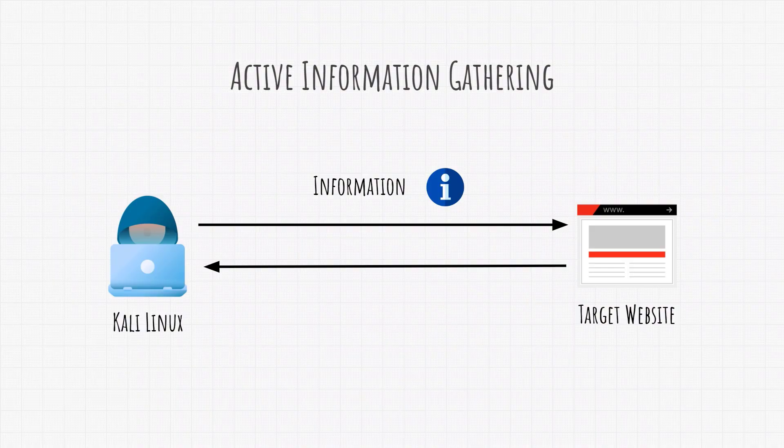This could mean directly exchanging packets with the target by visiting and enumerating their website, or it could mean talking to an employee — calling them on the phone to try to get them to tell us something important, which is also considered social engineering. Any action where you exchange something with the target is active information gathering. This can be legal to an extent. If you start performing advanced scans or OS fingerprinting, you most likely won't get in trouble, but you should still not do it without permission. Active information gathering usually provides much more important data than passive, since we are directly interacting with the target.